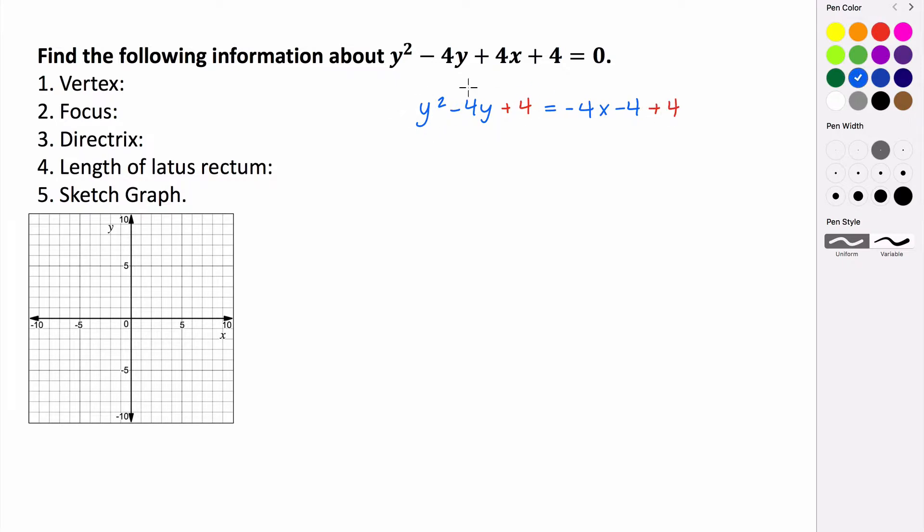Now we want to factor this because we want this in the factored form that we're used to. So we get y minus 2 quantity squared equals... And actually this negative 4 and positive 4 end up canceling. So we get negative 4 times x.